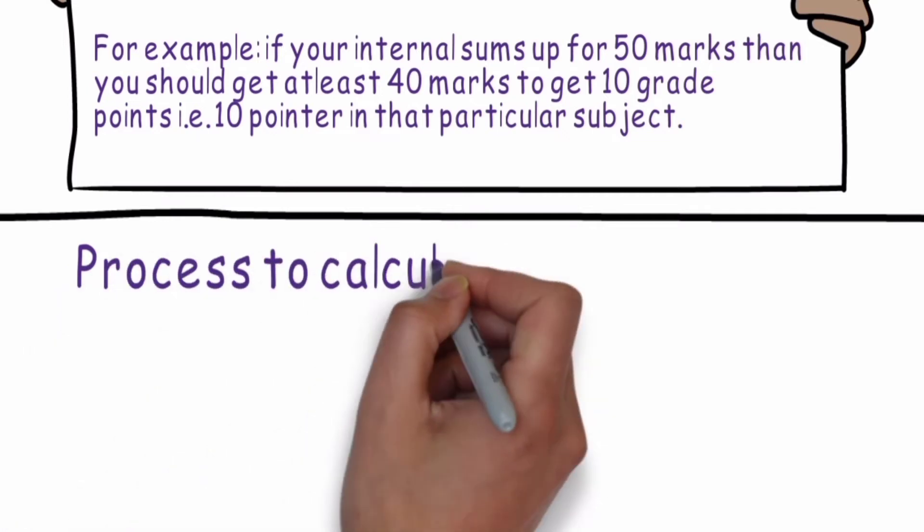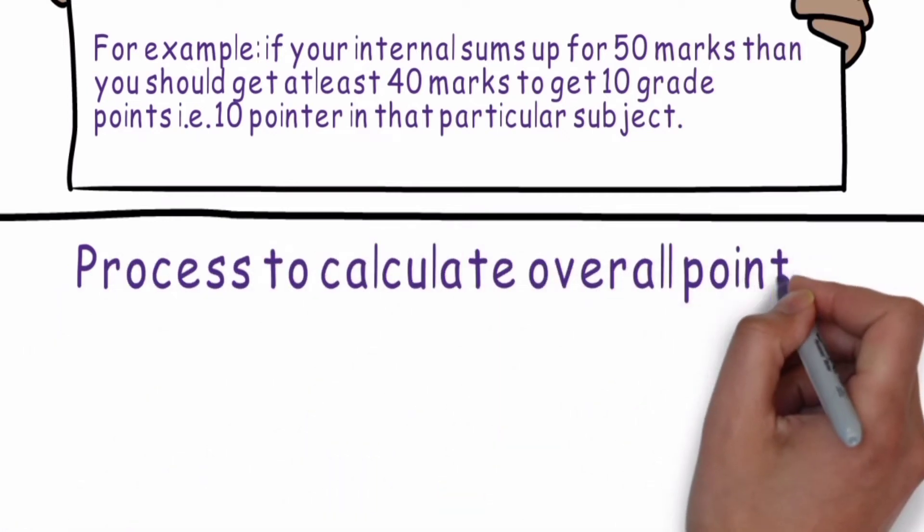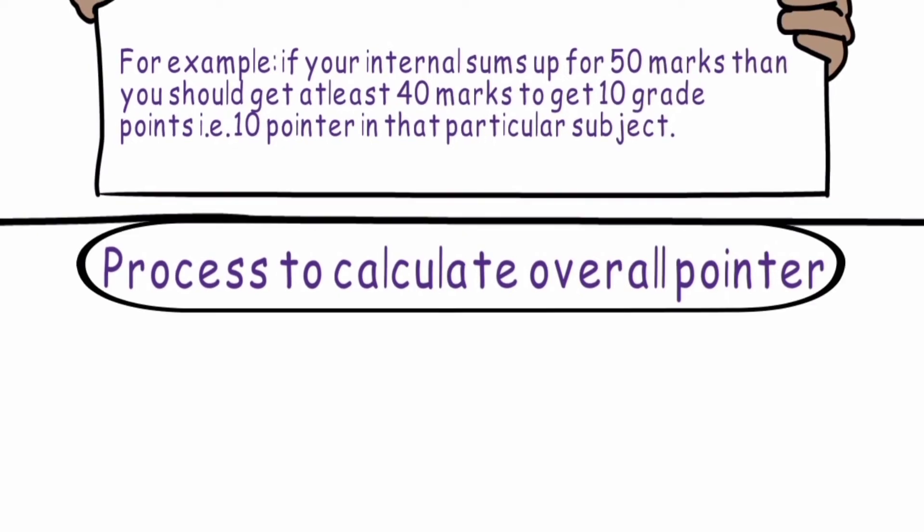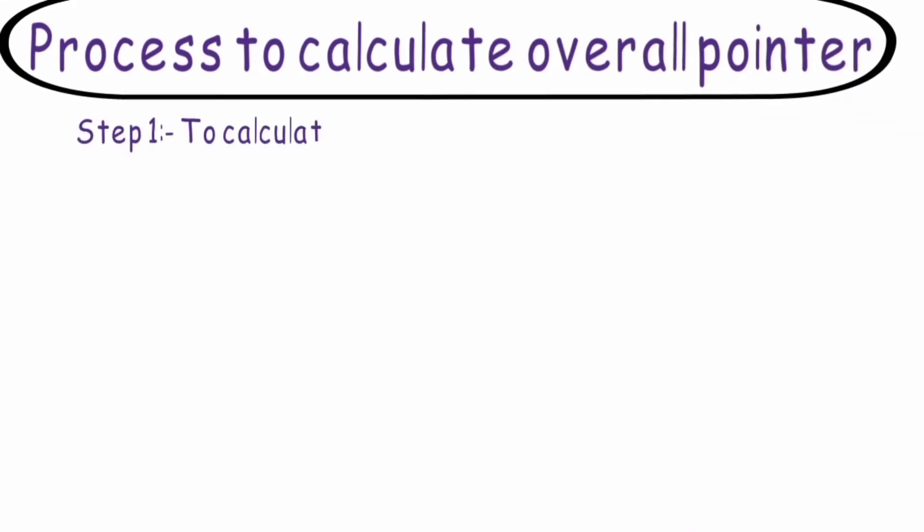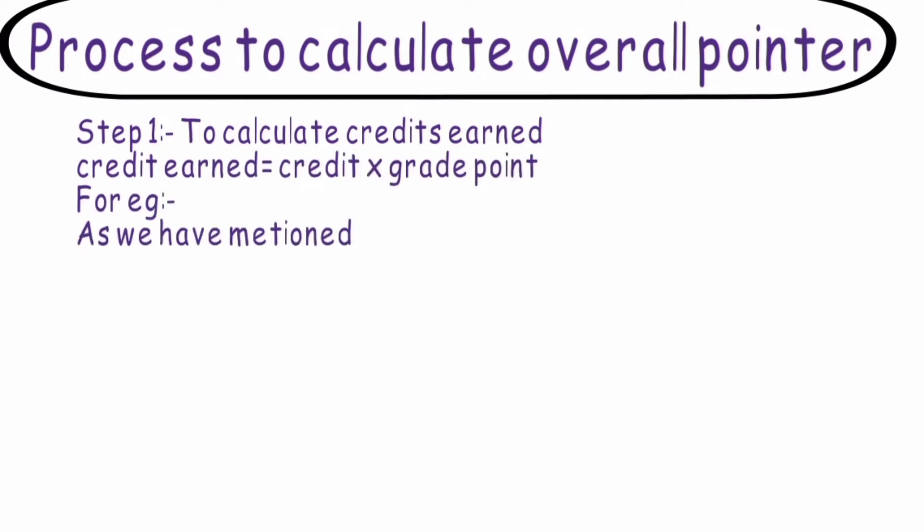Now the most important part of this video comes up: the process to calculate overall pointer. Step 1 is calculating credits earned. So for this you just need to multiply credits assigned with the grade points.